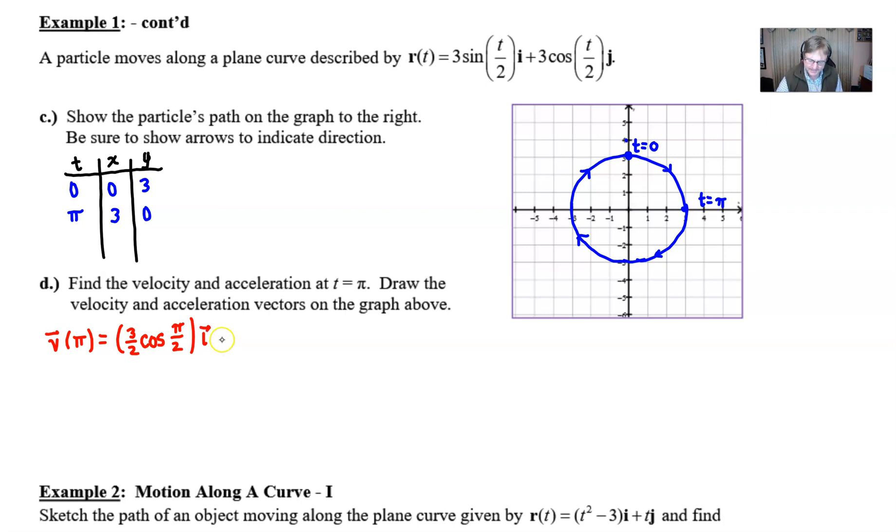I'll put the plus here and retain that minus, and we have negative 3 halves sine of π over 2 times j. Now this will simplify - the cosine of π over 2 is 0, the sine of π over 2 is 1, and all that is left standing is negative 3 halves j. So you might ask how do we graph that particular vector?